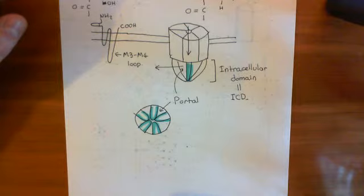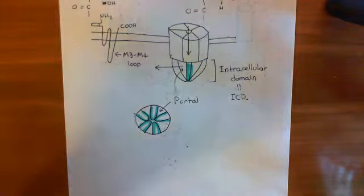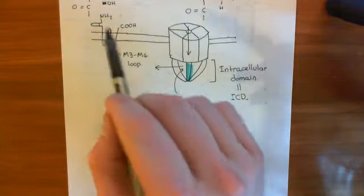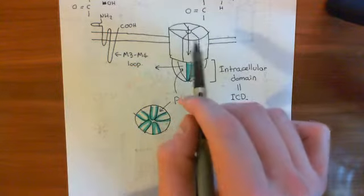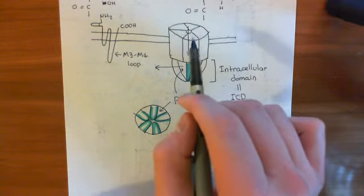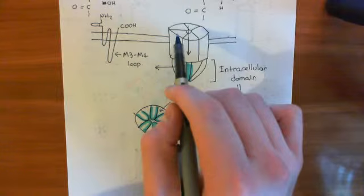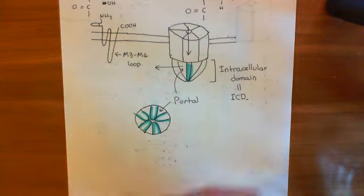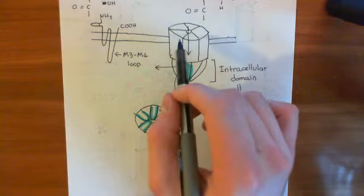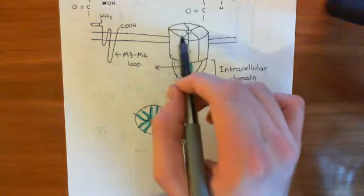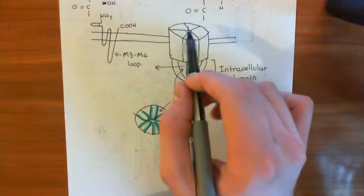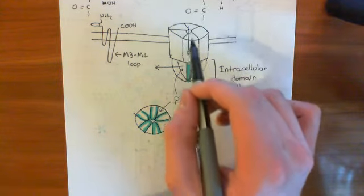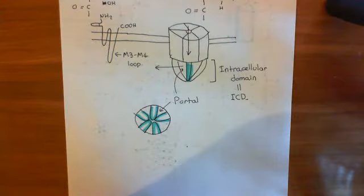What we want to discuss is ligand binding to these GluCl channels and the process of opening. The extracellular domain is the portion responsible for glutamate — the natural ligand — binding to this receptor. When glutamate binds, what will happen is that the M2 alpha helices will move outward, so that the lumen of the tube — the size of the pore through the GluCl channel — will increase.